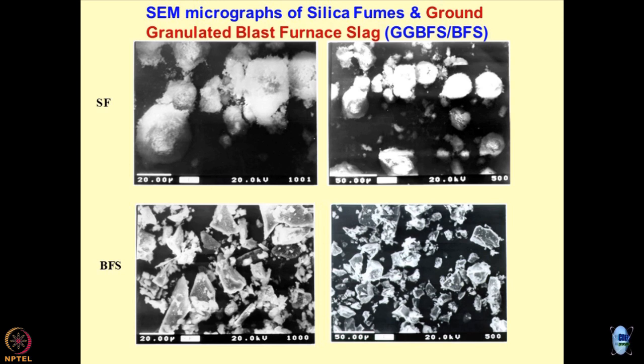Blast furnace slag normally looks very angular. This comes out of the steel-making process, and once you grind and pulverize it, it becomes GGBFS — ground granulated blast furnace slag — which is a very active cement. You can create PPC out of it by substituting 30–40% of the material in OPC.